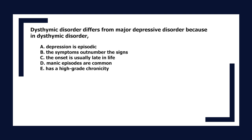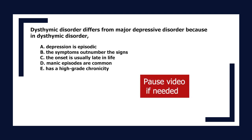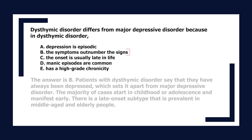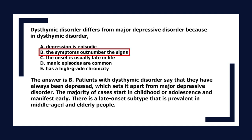Dysthymic disorder differs from major depressive disorder because in dysthymic disorder: A. Depression is episodic. B. The symptoms outnumber the signs. C. The onset is usually late in life. D. Manic episodes are common. E. Has a high-grade chronicity. The answer is E. Patients with dysthymic disorder say they have always been depressed. The majority of cases start in childhood or adolescence, though there is a late-onset subtype prevalent in middle-aged and elderly people.